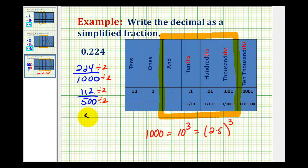So this would simplify to fifty-six all over two hundred fifty. Which once again, they're both even. So we divide them by two again. And now we have twenty-eight all over one hundred twenty-five.